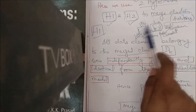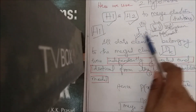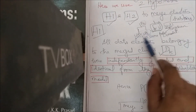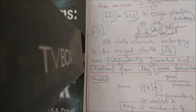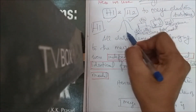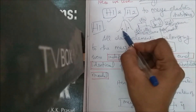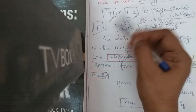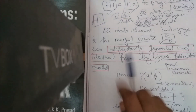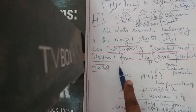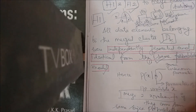The condition under H1 is that the two points must follow the same probabilistic distribution model. For example, if one point follows a Gaussian model, the other must also follow the same model — both points must fall within the same distribution curve. Additionally, the data should be independently and identically generated from the same probabilistic model.